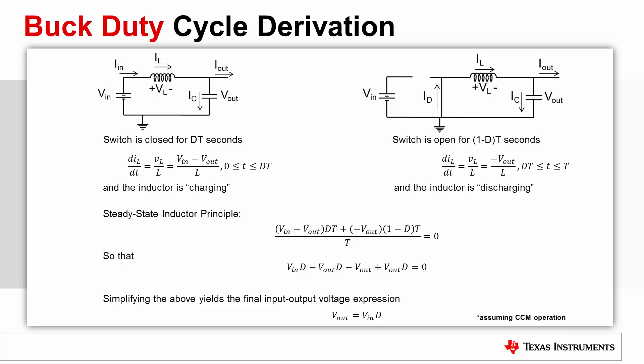In the second state, the inductor is discharging as the voltage is flipped across the inductor and has a value of minus V_out. The time spent in this state is (1 − D)·T. Because of the steady-state inductor principle, the average voltage across the inductor is zero. The average value is (V_in − V_out)·D·T + (−V_out)·(1 − D)·T over T, which equals zero. This simplifies to V_in·D − V_out·D − V_out + V_out·D = 0, and lastly, the output voltage equals the input voltage times the duty cycle: V_out = V_in · D. This is the input-to-output voltage expression of the buck converter.